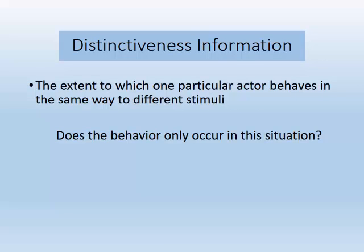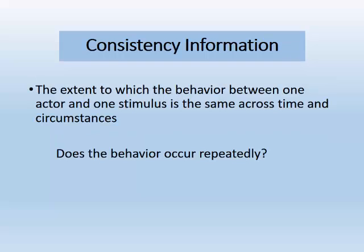A second type of information is distinctiveness information. This refers to the extent to which one particular actor behaves in the same way to different stimuli — in other words, does it only occur in this situation? The third type of information is consistency information, which is the extent to which the actor behaves the same way toward the same stimulus across time — in other words, does the behavior occur repeatedly?